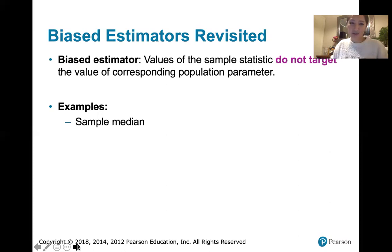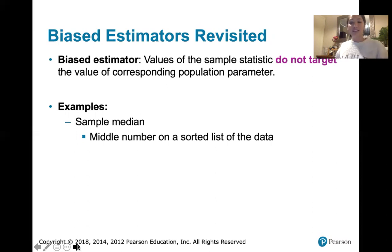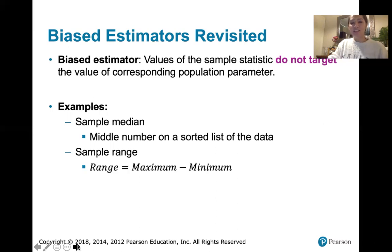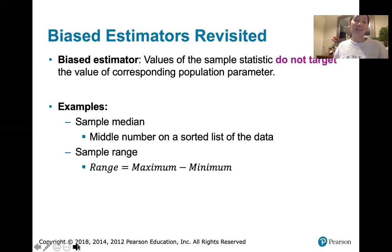Some examples of biased estimators: the sample median — the middle number on a sorted list of data. If you take that middle number for each sample and compute the mean of the sample medians, it turns out you don't tend to get the population median. Sample range is similar. Range is the maximum value minus the minimum value. If you take samples of the same size, compute the maximum minus minimum for each, and then find the mean of those sample ranges, you don't actually get the population range.